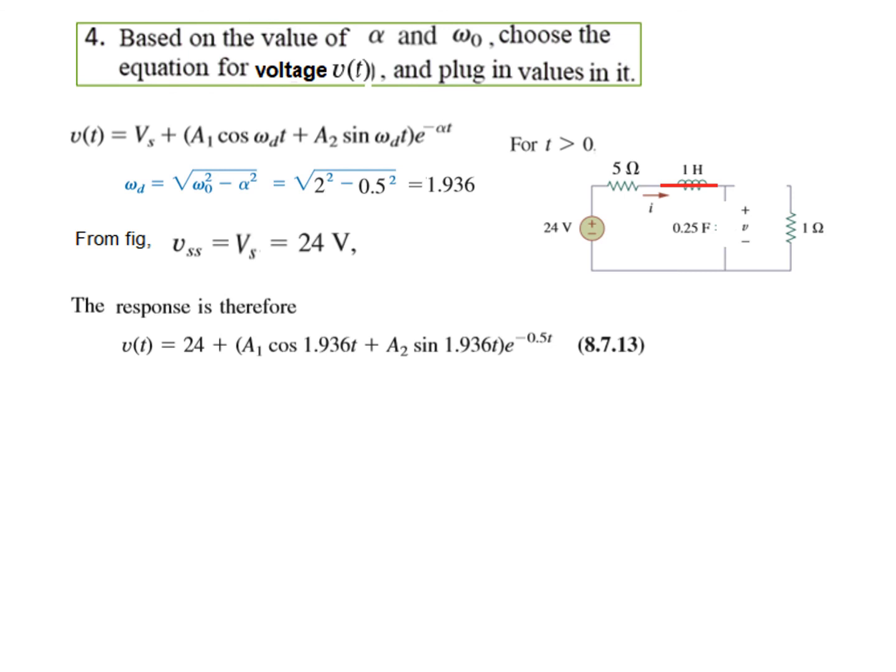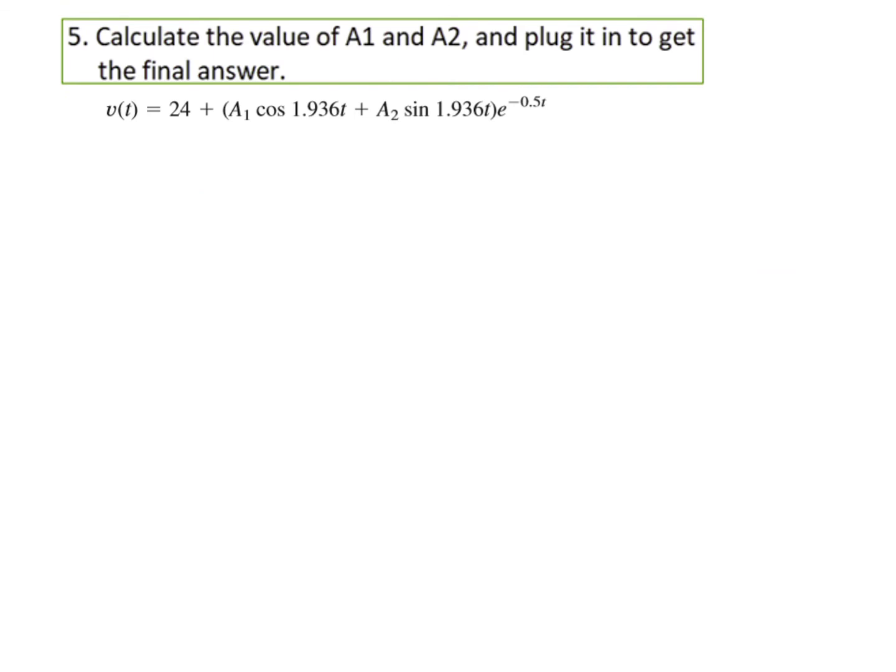Now we need to find A1 and A2. By putting T is equal to 0, and also by differentiating. So let us put here T equals 0. This becomes the equation. We know V0 is 12. So plug in that. So A1 is minus 12.